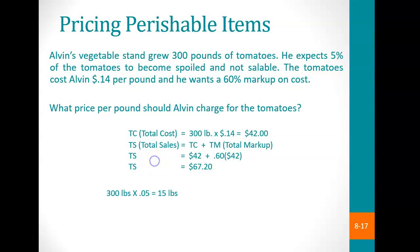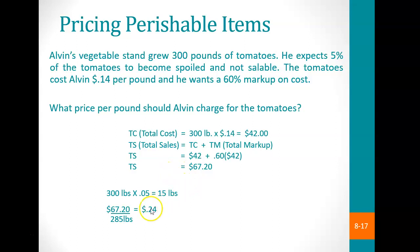We're not done. We expect 5% of the tomatoes — 15 pounds — to be spoiled and not sellable. We still want to reach total sales of $67.20. To do that, we divide the total sales of $67.20 by 285 pounds (the amount we expect to sell, not 300), which gives a price per pound of $0.24.